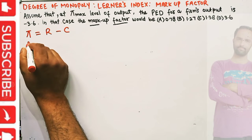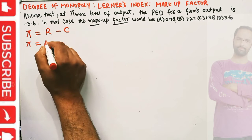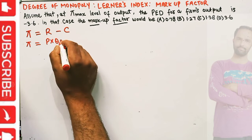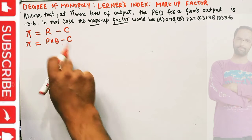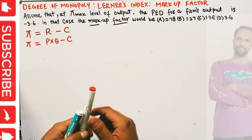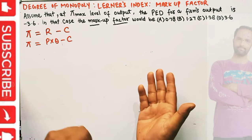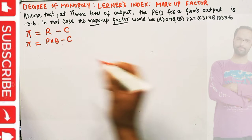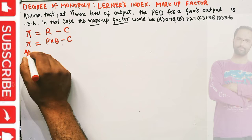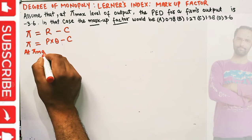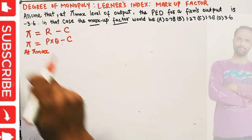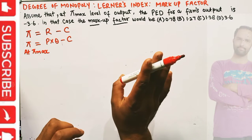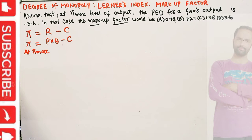We can write profit as price times output (p·q) minus cost c(q). For profit maximization, we require that marginal profit should be equal to zero — we take the derivative of the profit function with respect to output and set it equal to zero.